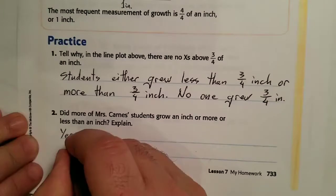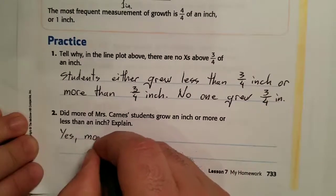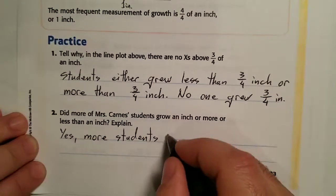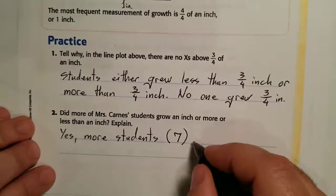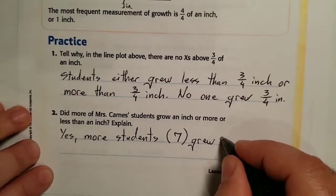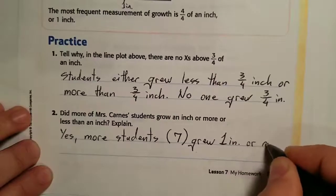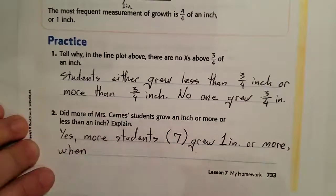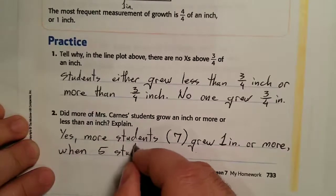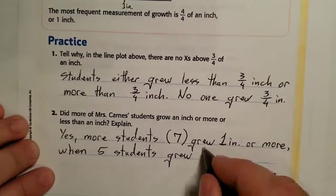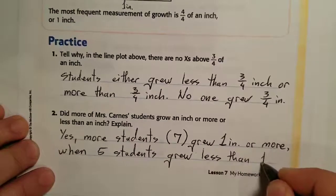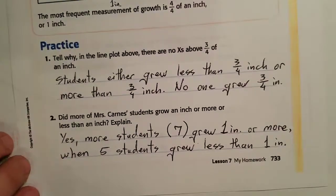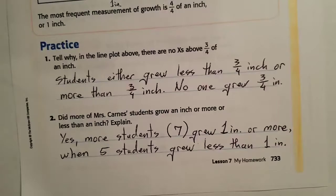Yes, more students grew one inch or more. Seven students grew one inch or more, while five students grew less than one inch. That's the best way to express our answer — it covers exactly what the question is asking us to explain.